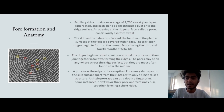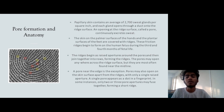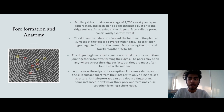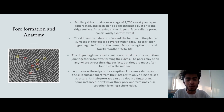We will study how pore formation happens and what is the anatomy of pores. According to science, the papillary skin of our hands contains an average of around 2,700 sweat glands per square inch. Each and every gland opens into a duct, which opens up onto the ridge surface. The opening at the ridge is called a pore, which is the means of secreting sweat from the body through the ridges of the palms.